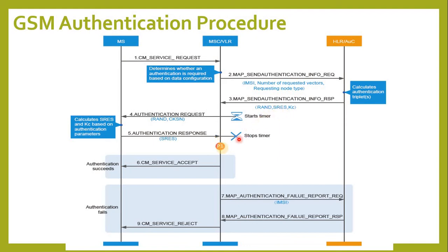If the SRESs are the same, the MSCVLR determines that the authentication is successful. If the SRESs are different, the MSCVLR determines that the authentication fails. For the success scenario, the MSCVLR sends a CM Service Accept message to the MS and the authentication procedure completes. For the failure scenario, the MSCVLR sends a MAP Authentication Failure Report REQ message to the HLRAUC with failure cause: wrong user response. The HLRAUC sends a MAP Authentication Failure Report RSP message to the MSCVLR. The MSCVLR then sends a CM Service Reject message to the MS.